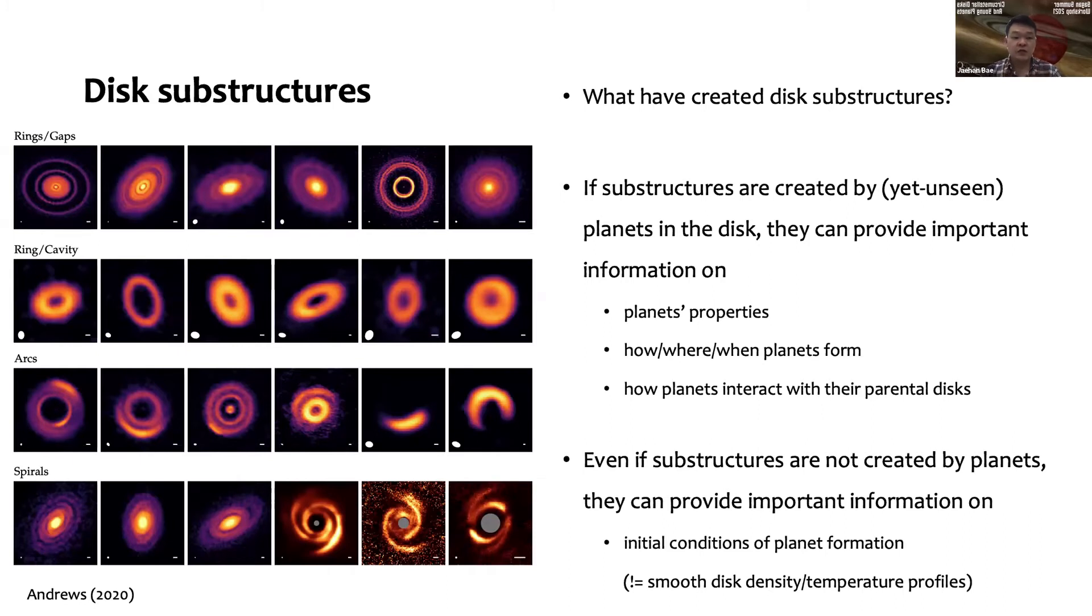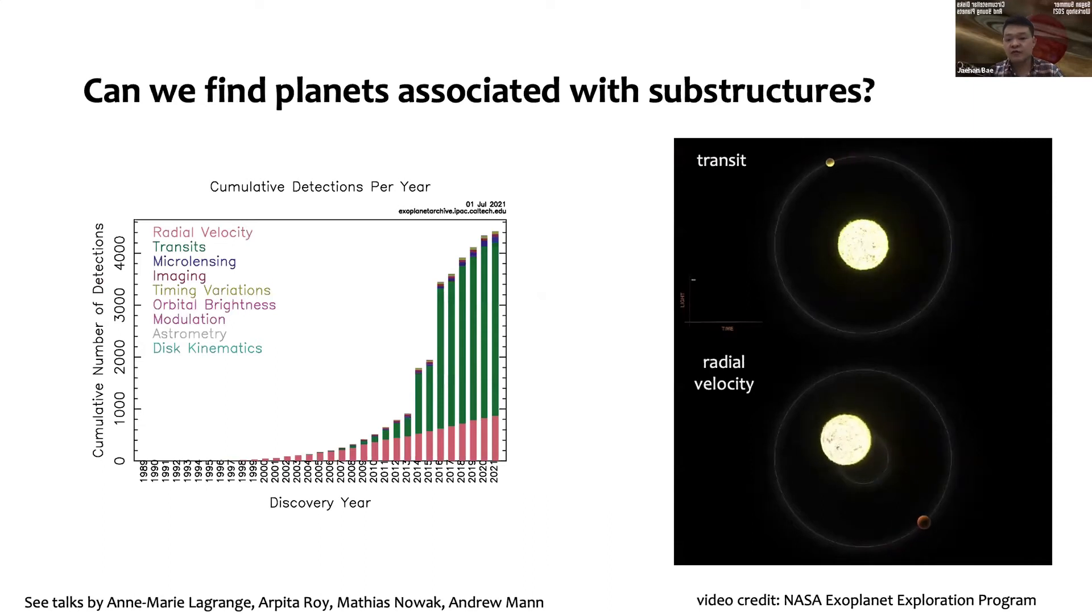But as you can see, if this is created by something else than planets and these disks don't have planets at the moment, then what this might tell us is that the initial condition may not be smooth. The grains are collected in narrow radial regions or narrow azimuthal regions, so we might need to think about how we can implement this kind of distribution as initial conditions in planet formation models.